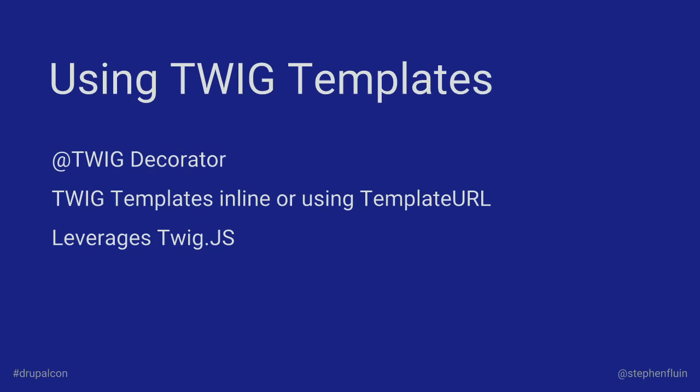This is really three things: they've got what we call the Twig decorator. In Angular and in TypeScript, you're able to supply metadata about any sort of object using decorator syntax. You can either have inline templates or specify them out to a template URL. And it also tries to leverage an already existing project called Twig.js, which does the specific rendering and replacements.